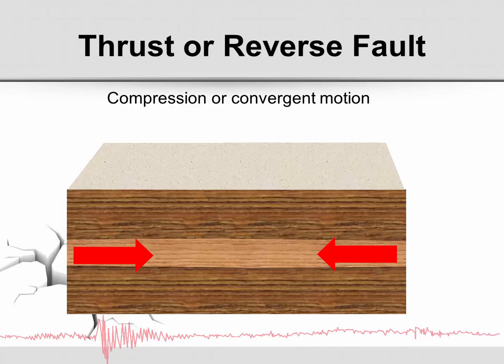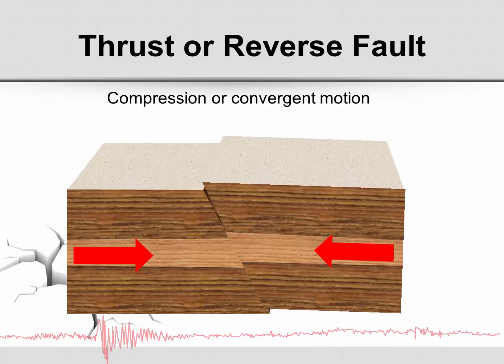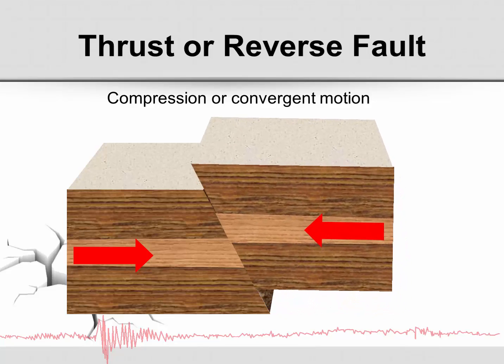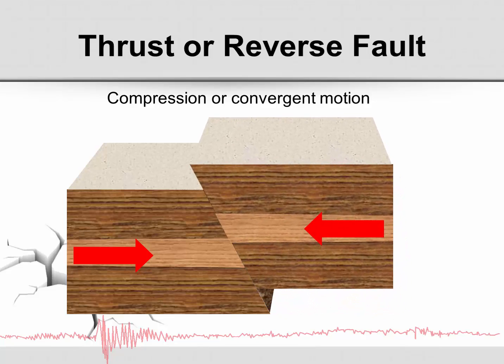Opposite the normal fault, we have a thrust or reverse fault. This occurs from compression or convergent motion. When two plates are pushing against each other, one plate may go down or another one may go up. This creates a thrust or reverse fault.